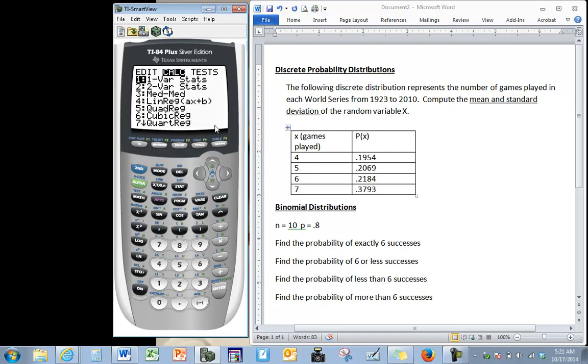Even though we have two lists we still want one of our stats, but we need to enter in L1. L1 is right above the number one and since it's in blue we have to press the second button, comma, L2.